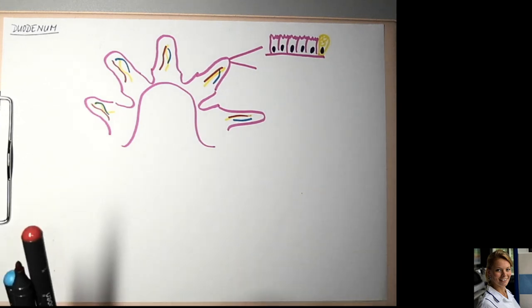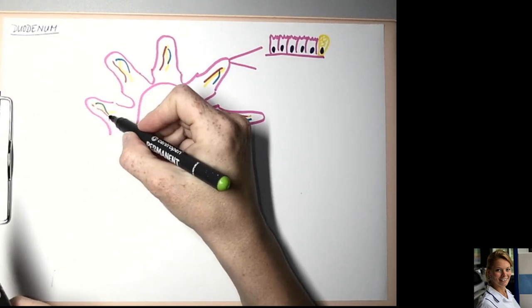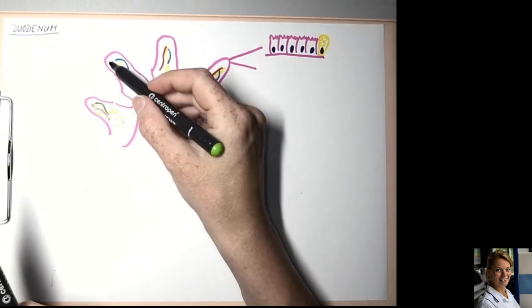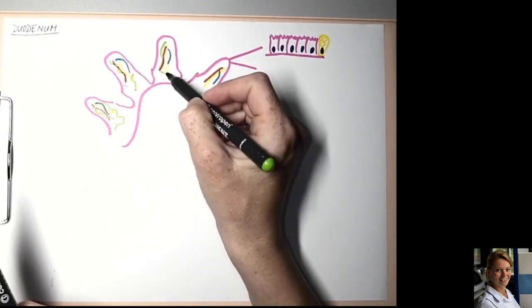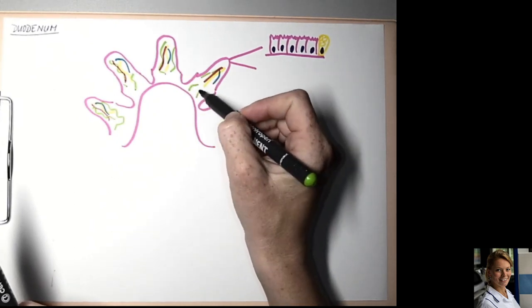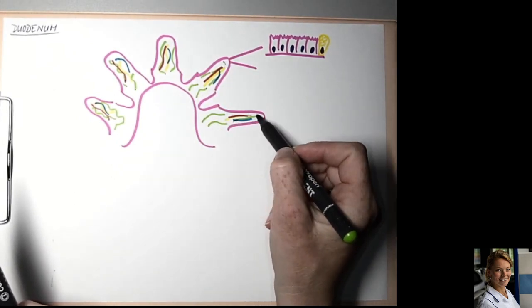Beneath epithelium is loose connective tissue which forms the core of the villi. I am drawing the collagen fibers.